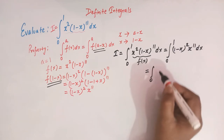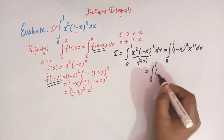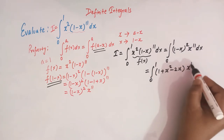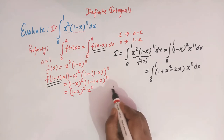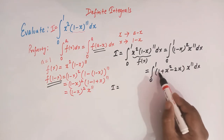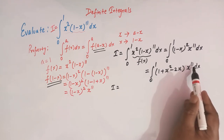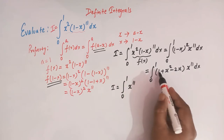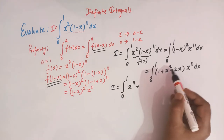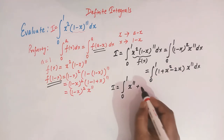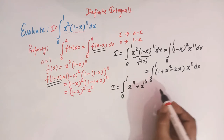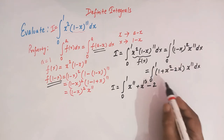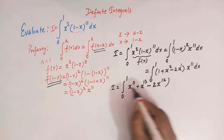Now we expand (1 minus x) squared, which gives 1 plus x squared minus 2x. Multiplying each term by x raised to 11, we get the integral from 0 to 1 of x raised to 11 plus x raised to 13 minus 2 times x raised to 12 dx.